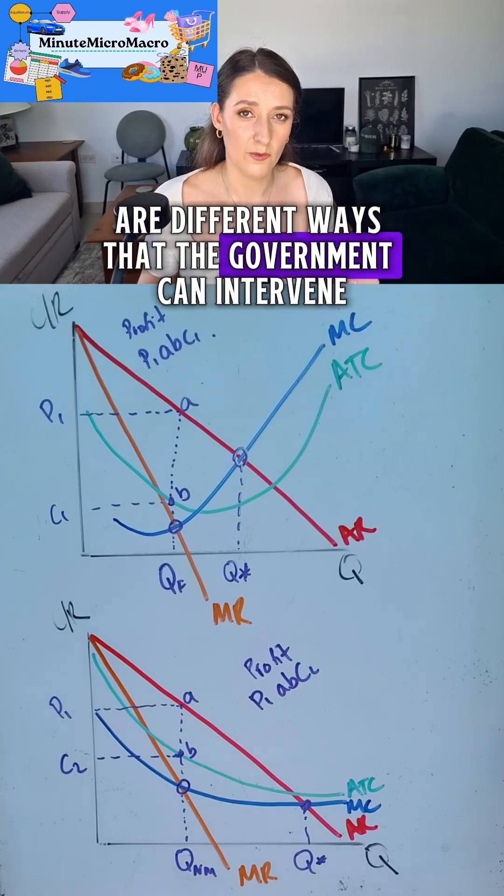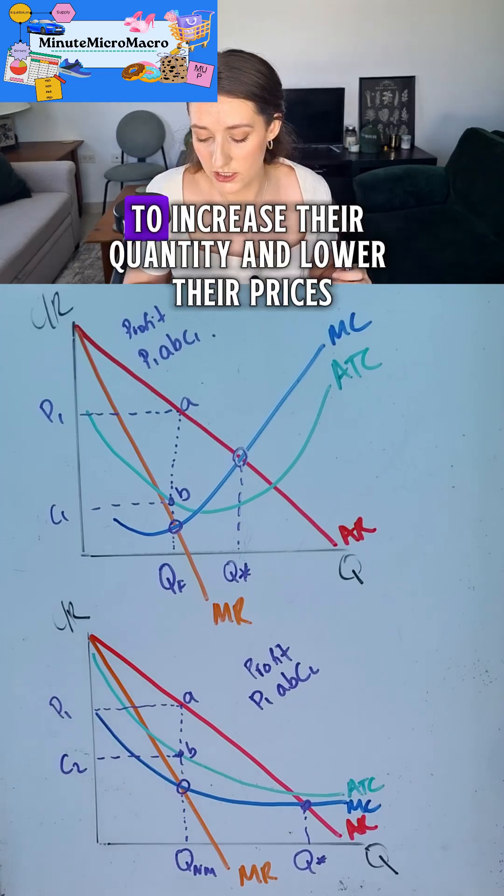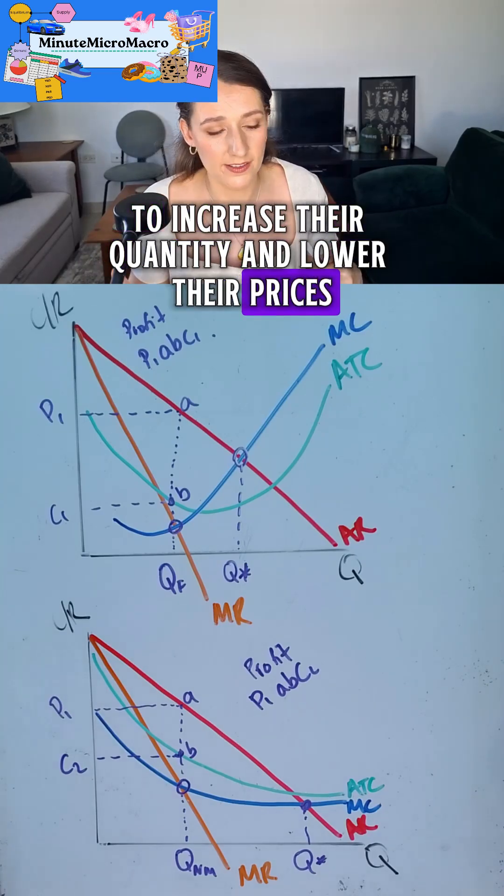There are different ways that the government can intervene to try and encourage monopolies that have huge amounts of market power to increase their quantity and lower their prices.